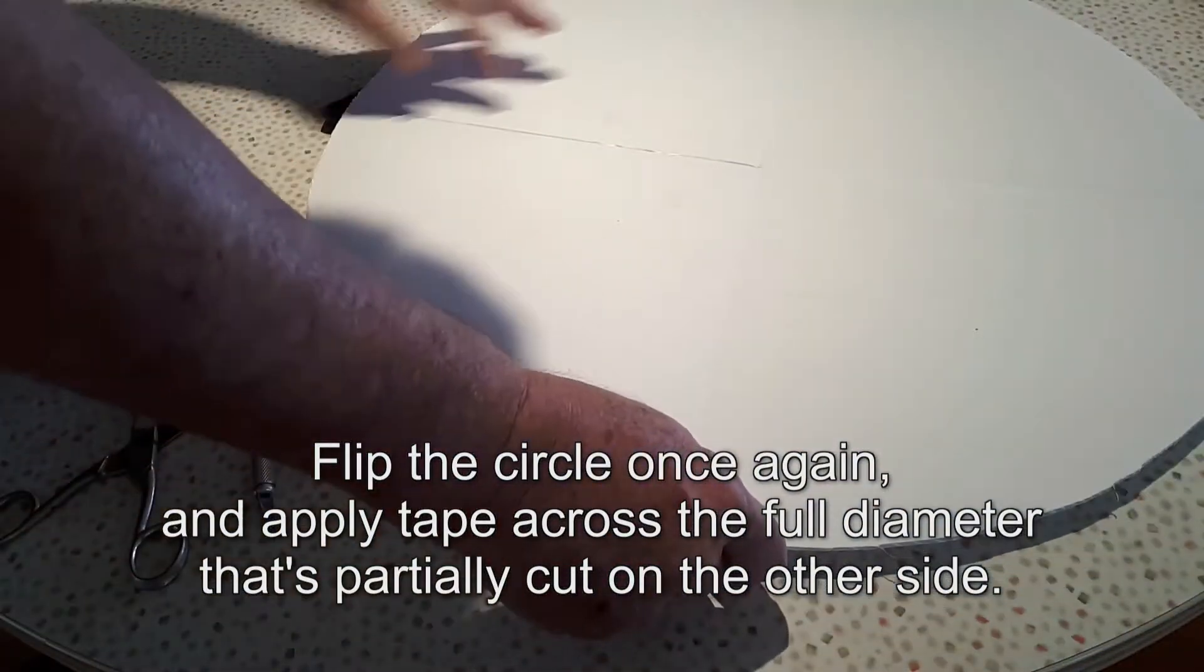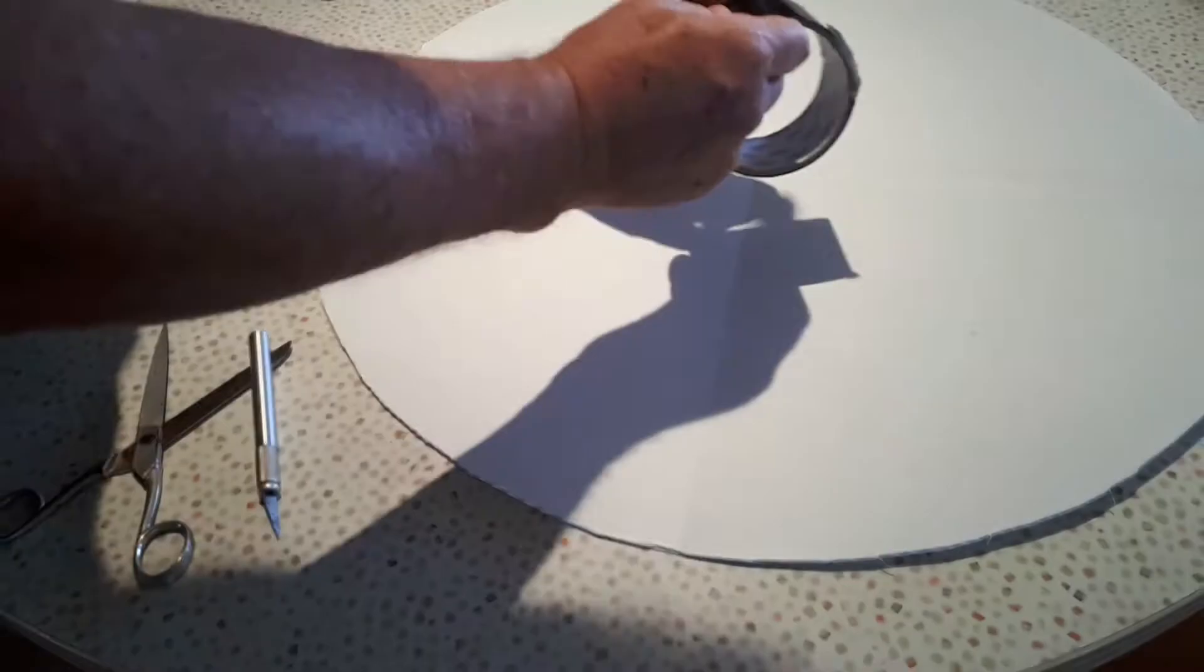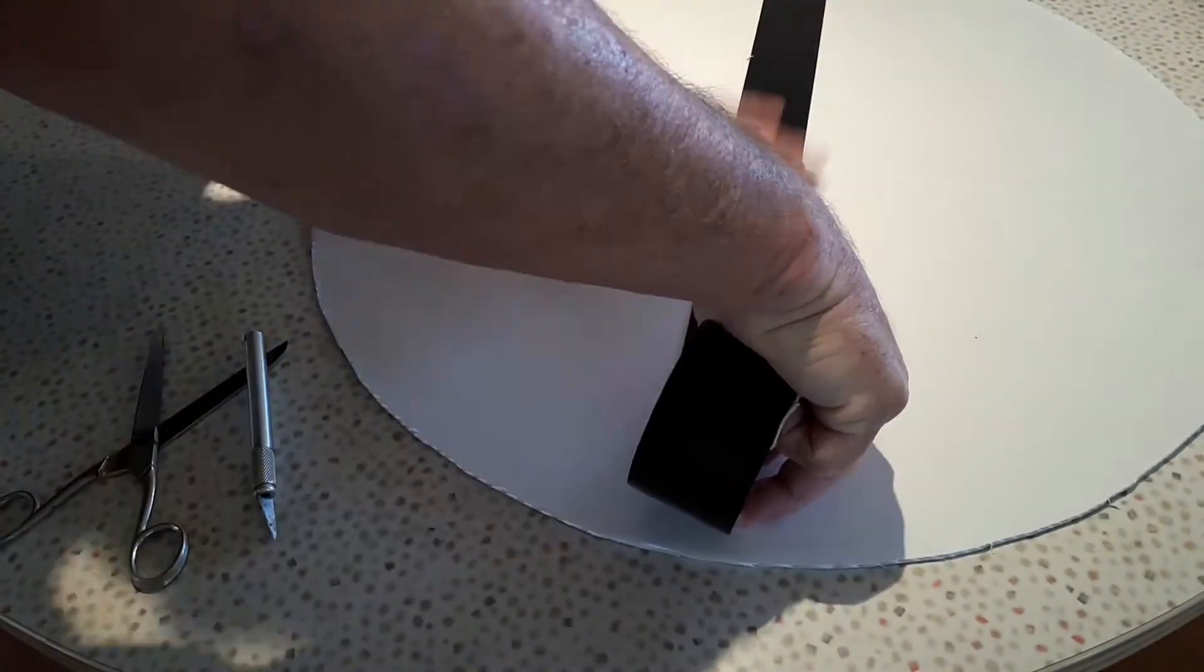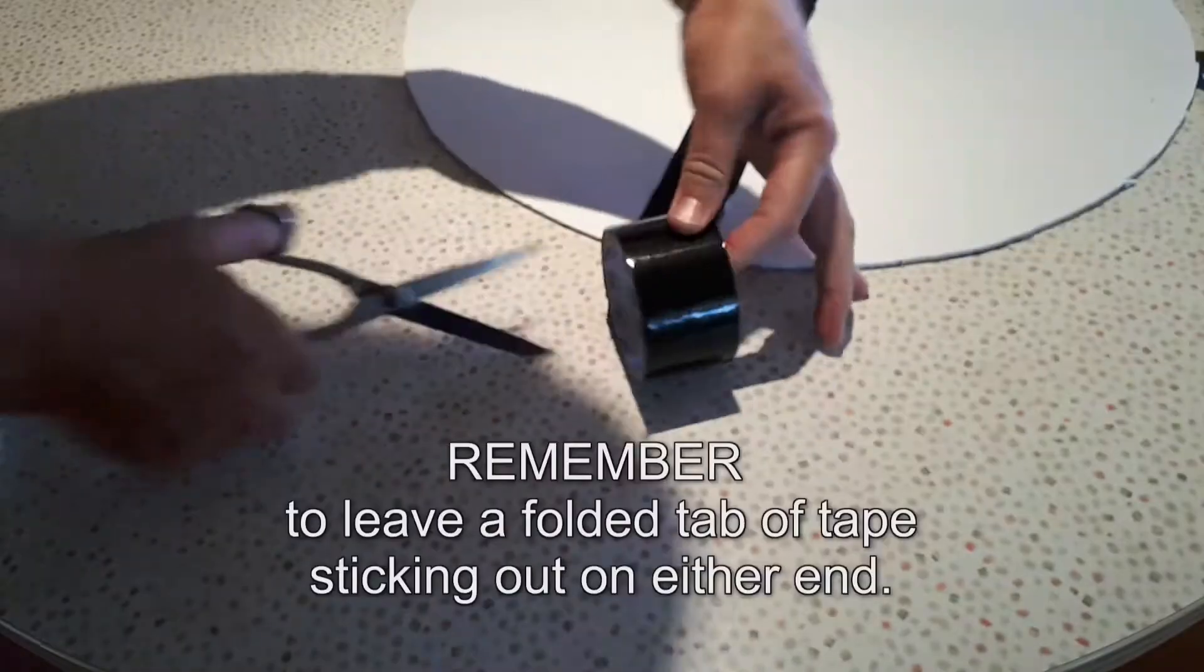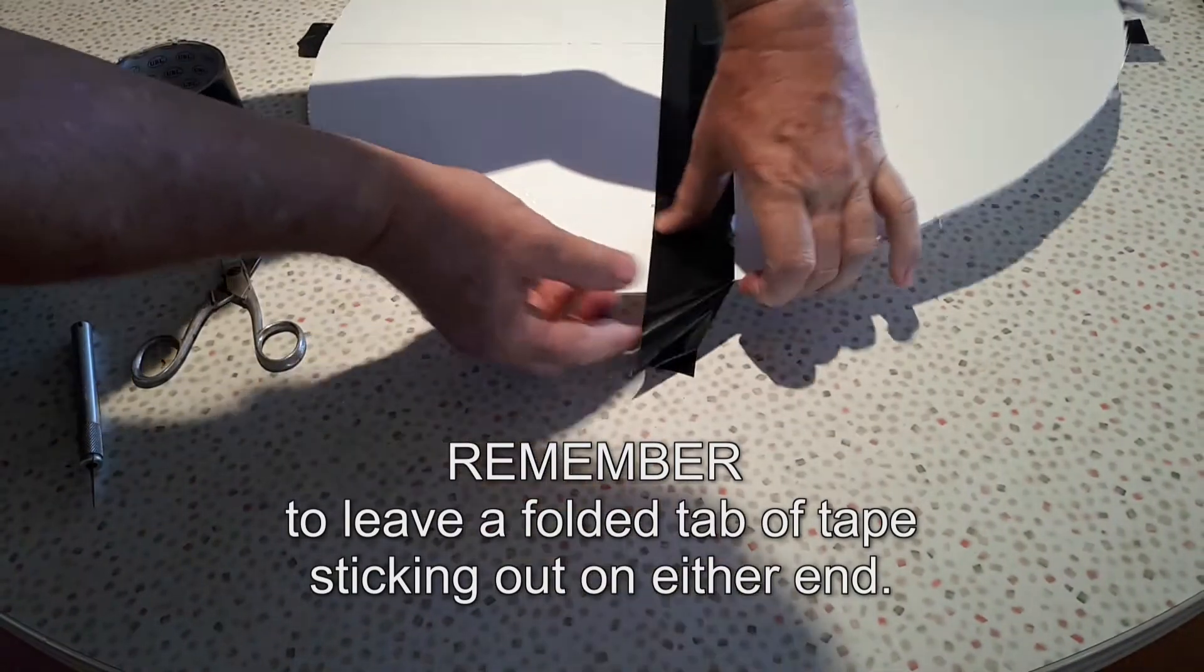Flip the circle over once again and apply the tape across the full diameter that's partially cut on the other side. And don't forget to leave a folded tab of tape sticking out at the ends.